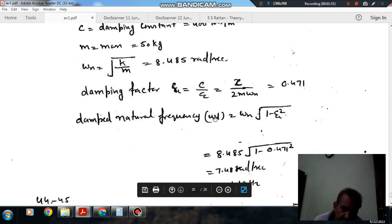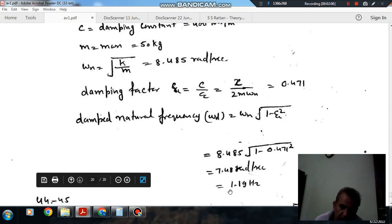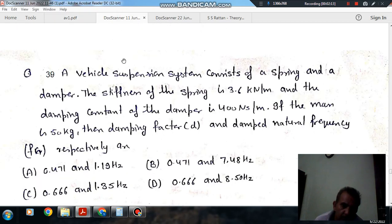We have omega_d as 7.48 rad/sec. We can convert it into Hertz by dividing by 2π. That gives 1.19 Hz. So the answer is option A.